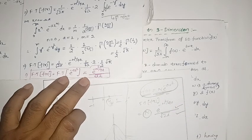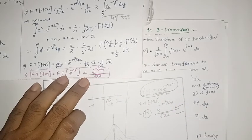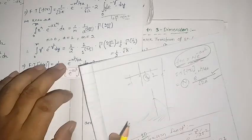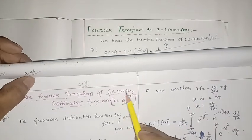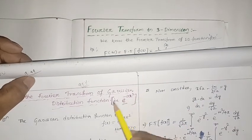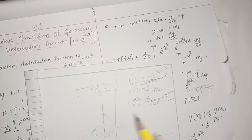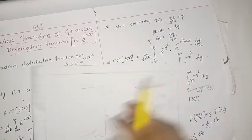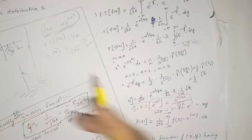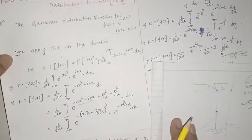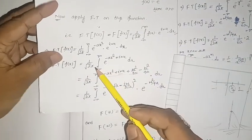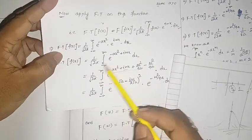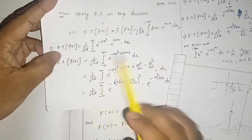In some exams this type of question is asked — you have to find the Fourier transform of N times e to the minus a x squared. Since N is a constant, it simply comes outside the integration and multiplies at the end, so only N is multiplied at the front of the result.